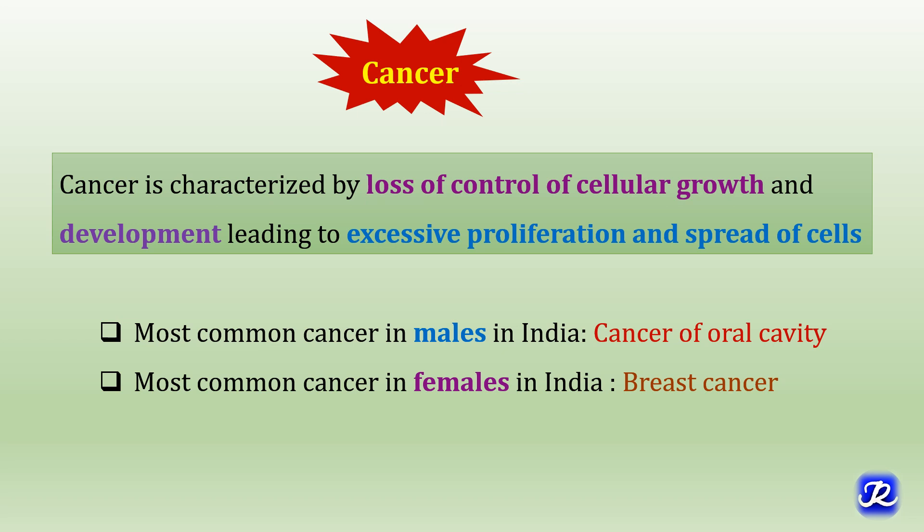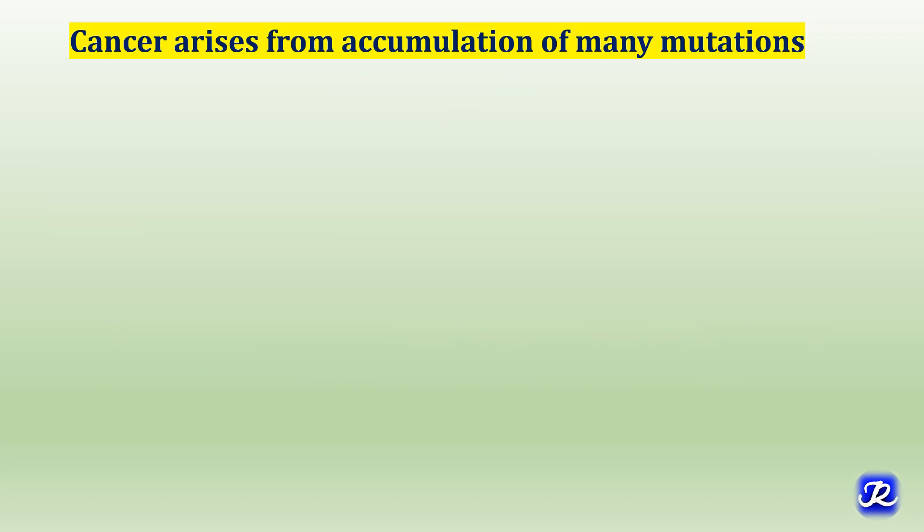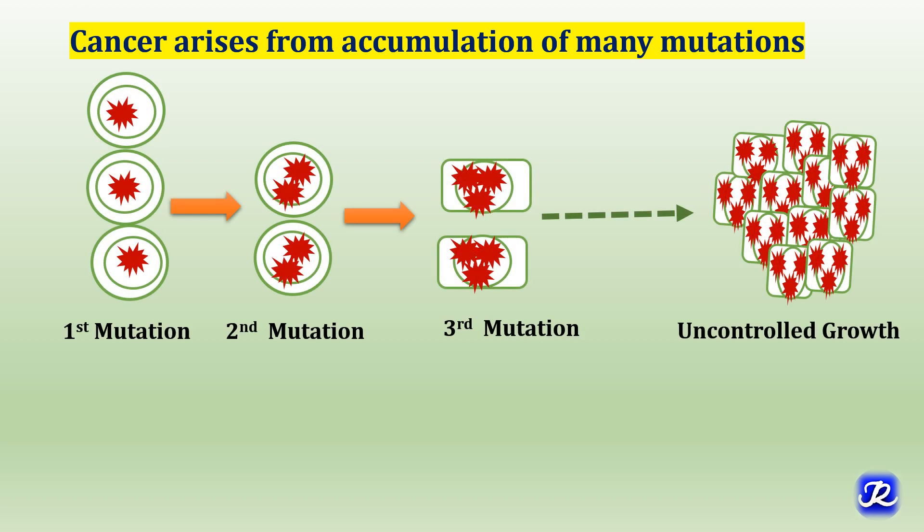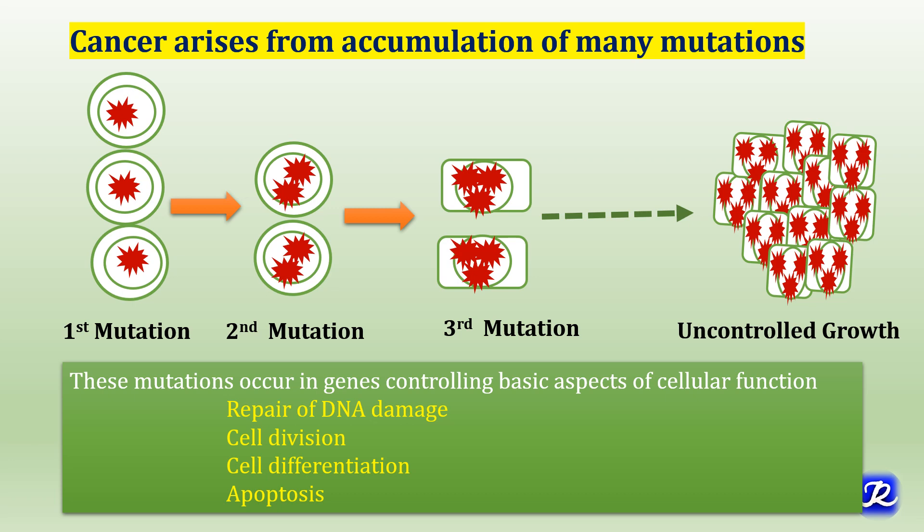The exact etiology of cancer is not known but it is said to have a multifactorial etiology. DNA damage is central to cancer development. Cancer arises from accumulation of many mutations and it takes many years to develop. Mutation is a change in the nucleotide sequence of DNA which causes a permanent change in the DNA sequence. These mutations occur in genes controlling basic aspects of cellular functions like repair of DNA damage, cell division, cell differentiation and apoptosis. Damaged DNA or accumulated mutations make the cell genetically abnormal and prime to develop cancer.